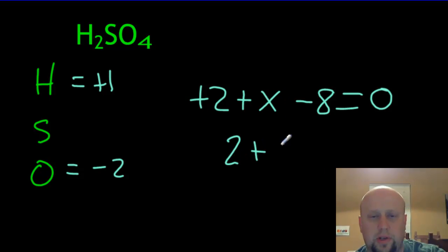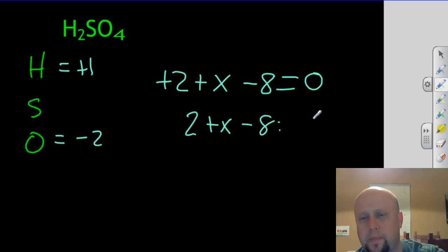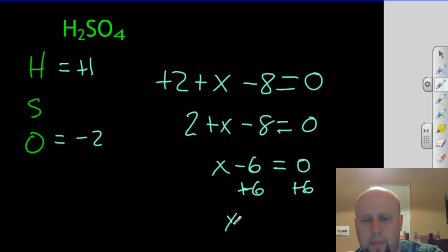So, again, I'm going to clean this up just a little bit. So two plus x minus eight equals zero. x minus six equals zero. Add six to both sides. And we get x equals plus six. What was the x? x is sulfur. Sulfur is plus six.